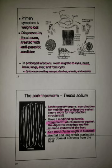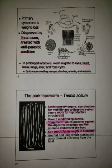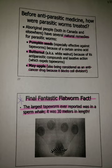The pork tapeworm lacks sensory organs, coordination for mobility, and a digestive system, which means there's more room for reproductive structures. They have a modified epidermis, or tegument, which protects against the digestive enzymes and immune system of the host. They can reach 7 meters in length in humans. They're flat and long, which maximizes absorption of nutrients from the host.